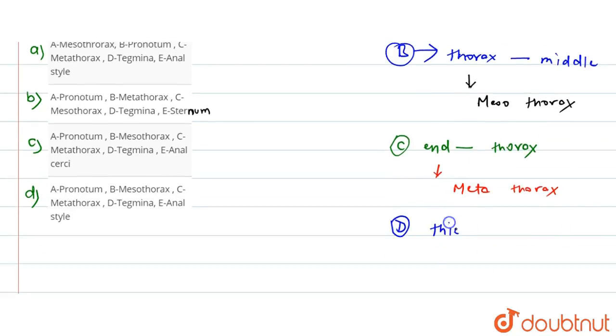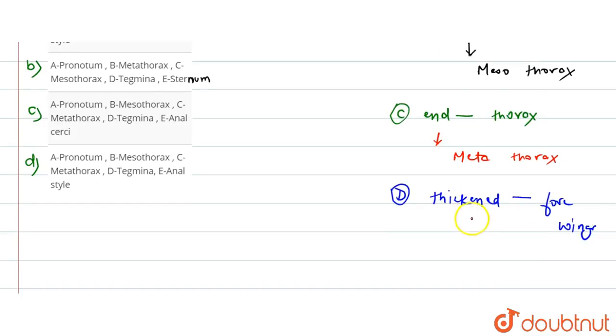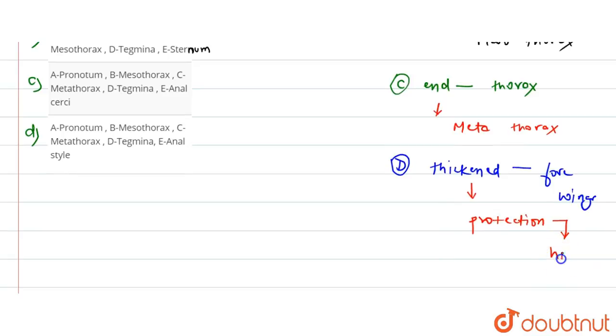The fore wings are thickened and the main purpose is protection of the following hind wings, and we call these wings tegmina, which is the characteristic feature of the order.